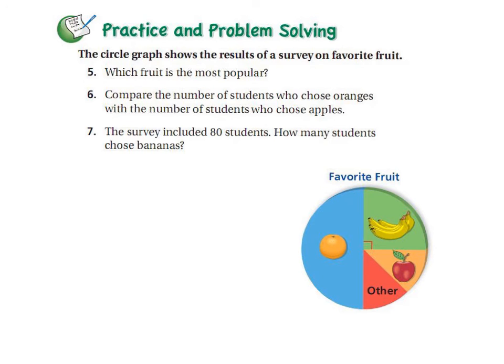Let's look at a circle graph and see if we can answer some questions. I surveyed people and asked what's your favorite fruit. If you look at this circle graph, which fruit looks to be the most popular? Which fruit takes up most of the graph? It looks like oranges. Can you compare the number of students who chose oranges with those who chose apples? Let's look at the graph. Oranges looks to be half of the circle. A half is the same as 50%, so 50% of people chose oranges.